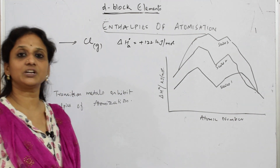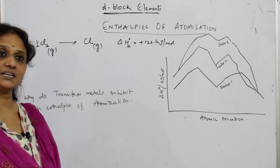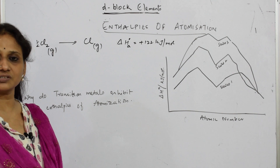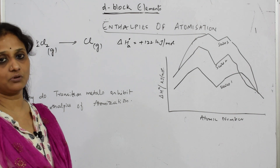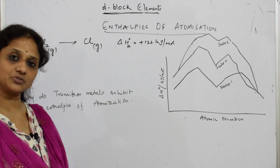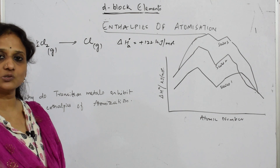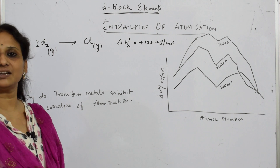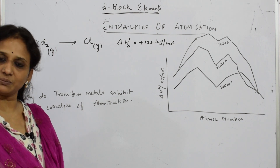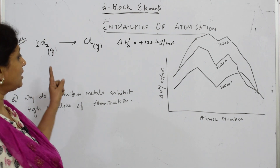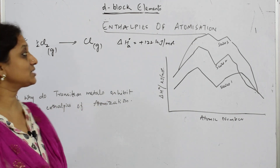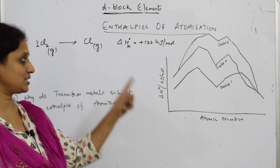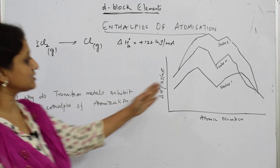We already studied melting point trends. Higher the number of valence electrons — that is, the number of unpaired electrons — stronger is the metallic bond formed. If the metallic bond is stronger, the melting point is higher. Similarly, more valence electrons means stronger metallic bond and higher enthalpy of atomization, because we have to break the bond to form individual atoms.